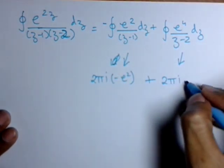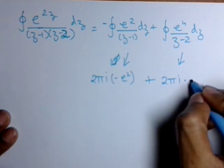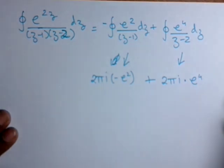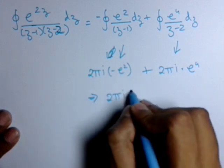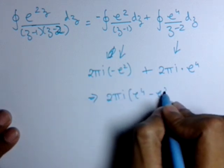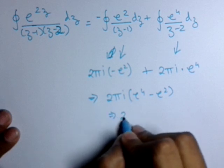And the second part is 2πi into e raised to 4, which is again a constant function. So now we can combine it as 2πi(e raised to 4 minus e squared), which is equal to 2πi times e squared times (e squared minus 1). So this is the answer.